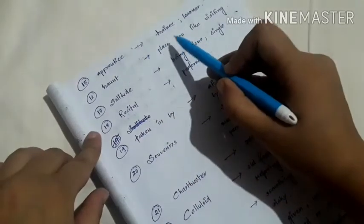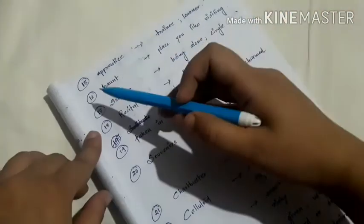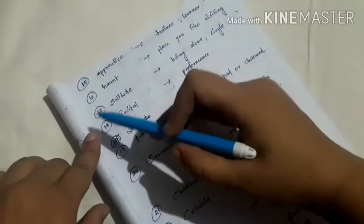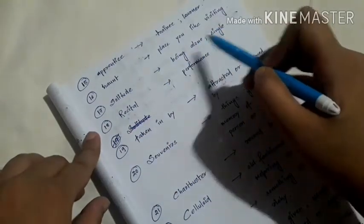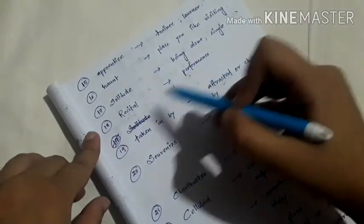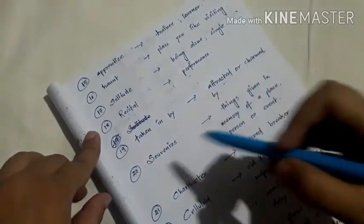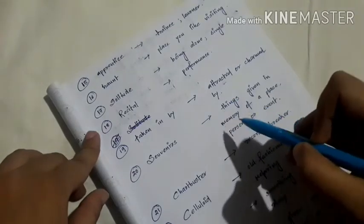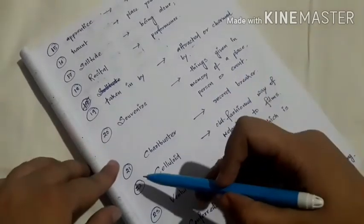Number fifteen, apprentice, meaning trainee or learner or someone who is learning. Number sixteen, haunt, meaning a place you like visiting. Number seventeen, solitude, meaning being alone. Number eighteen, recital, meaning performance. Number nineteen, taken in by, meaning attracted or charmed by. Number twenty, souvenirs, meaning things given in memory of a place, person, or event.